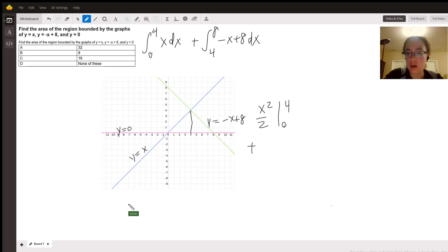And the second contribution is minus x squared over two plus eight x evaluated from four to eight.